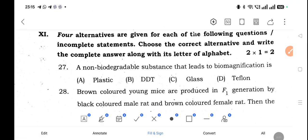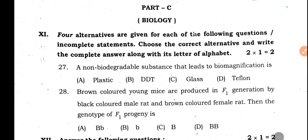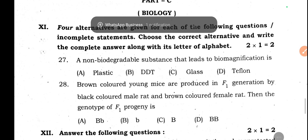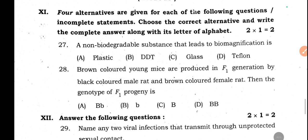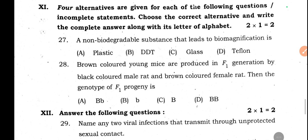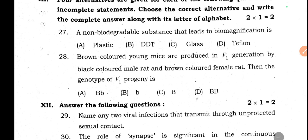Good evening. We already discussed the 2025 preparatory question paper physics part and chemistry part. Now we are going to discuss part C, that's biology. So not wasting time, let's start with question number nine — here are two multiple choice questions.